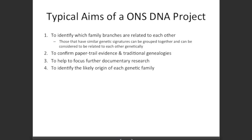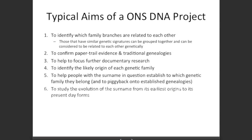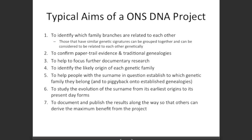Further goals include: identifying the likely origin of each genetic family; helping people with the surname establish which genetic family they belong to; and piggybacking onto established genealogies — a real carrot to induce people to join, since joining and matching someone with an established genealogy can jump you from 1800 back to 1200. A sixth goal would be to study the evolution of the surname and its various variants from early origins to the present day. And of course, to document and publish results along the way so others can derive the maximum benefit from the project.